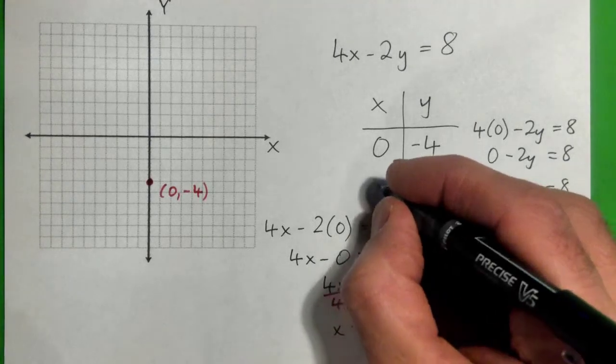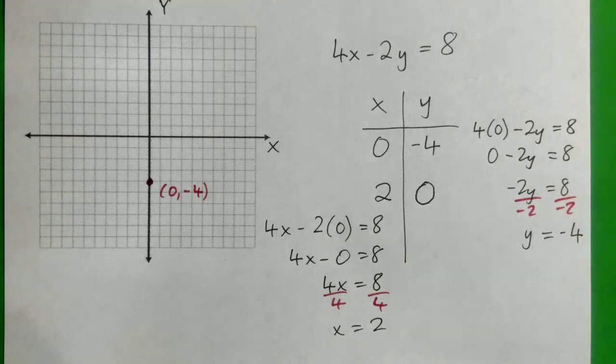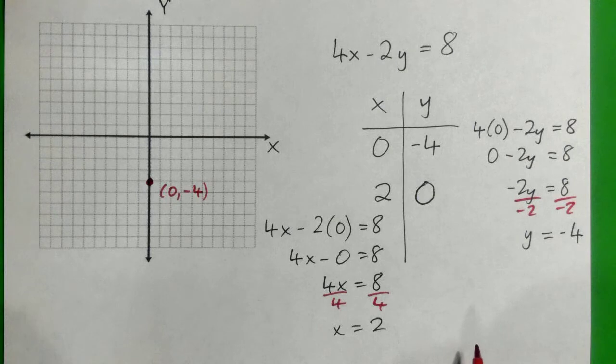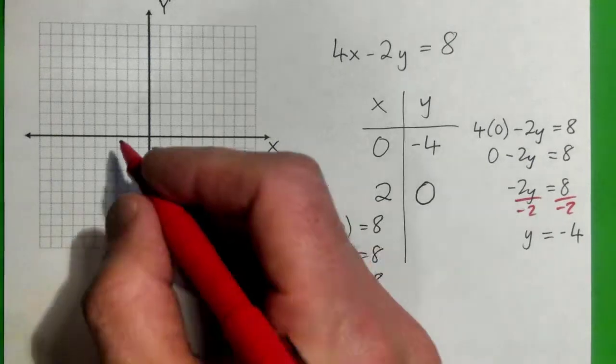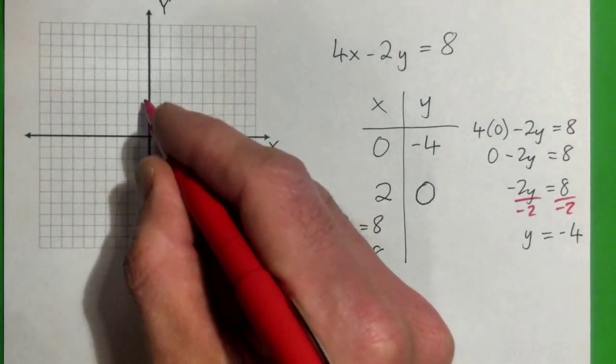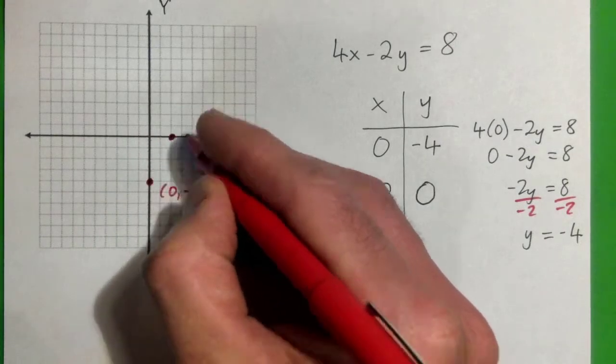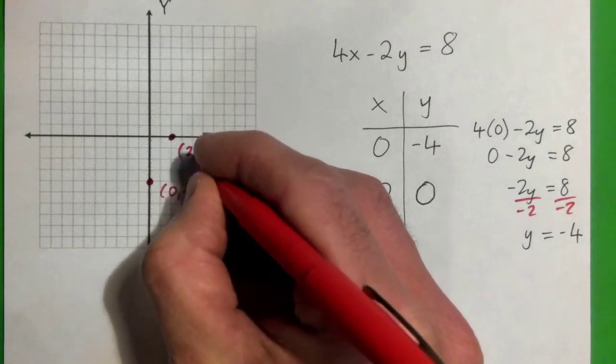So we have this point, 2, 0. Now where is that on the graph? And x is 2, and then y is 0. So we would go x over 2 spots. Yeah, exactly. x is 2 and y is 0. So that's that point there, 2, 0.